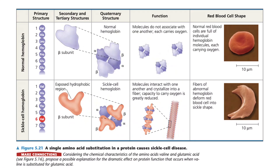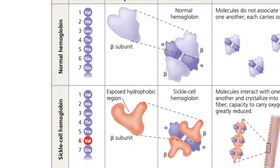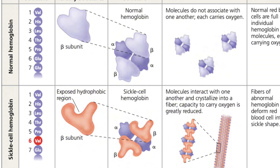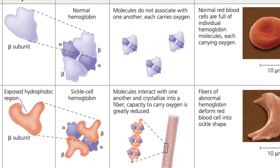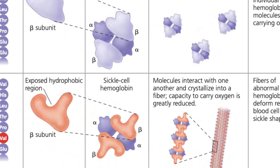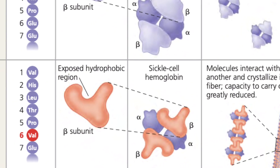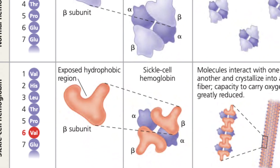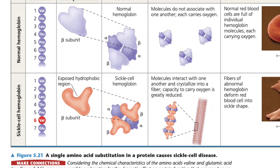What's cool is that you've actually seen an example of a non-conservative missense mutation before, back in unit one. In this image, we revisit the earlier study of proteins where hemoglobin was used as an example to demonstrate how the primary structure of a protein plays a role in determining the overall tertiary and even quaternary structure of that entire protein. Here, the replacement of glutamic acid with valine — a nonpolar amino acid — was used as an example to demonstrate this very point.